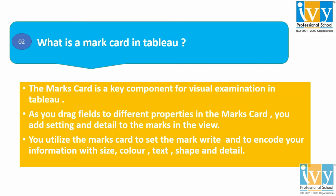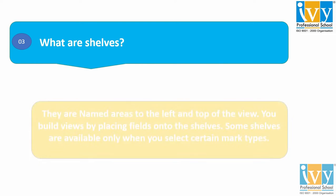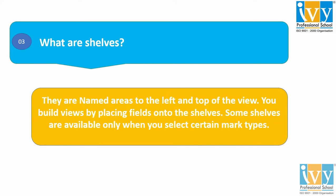Moving on to the next question — question number 3: what are shelves? So in Tableau, shelves are the areas on the left and top of the view. By placing fields onto the shelves we basically build views, and whenever you select certain mark types, then only some shelves are available. So these are shelves in Tableau.